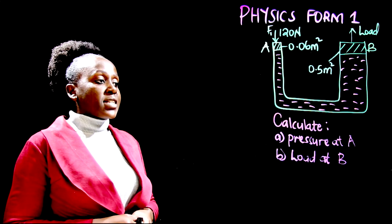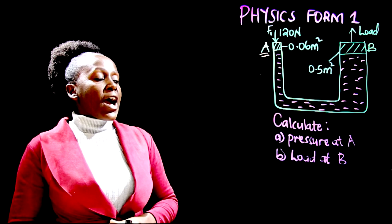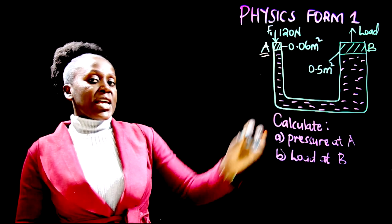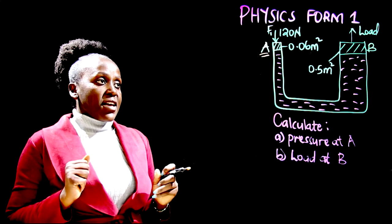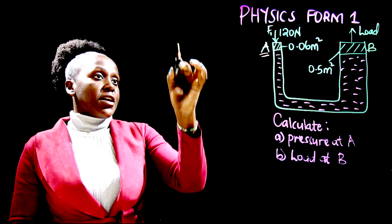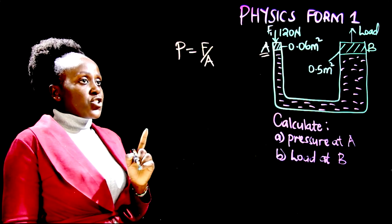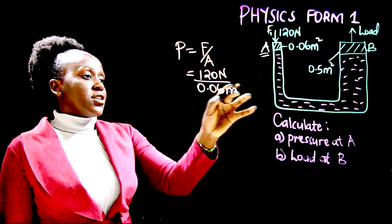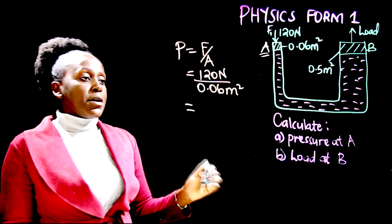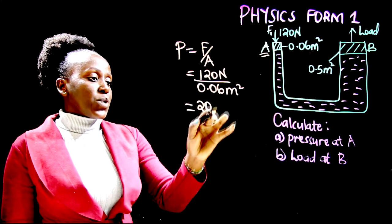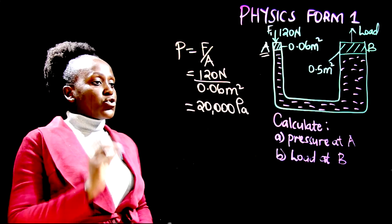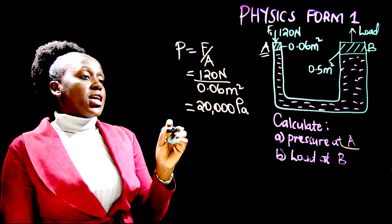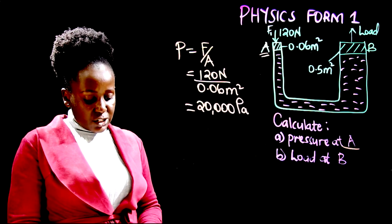Beginning with the pressure at A: in region A we have a force of 120 newtons acting on an area of 0.06 meters squared. Pressure equals force over area. So the force is 120 newtons and the area is 0.06 meters squared. Dividing 120 by 0.06 gives 20,000 pascals.